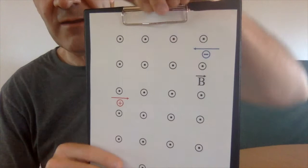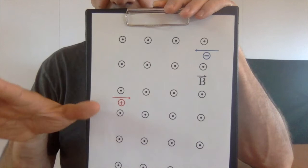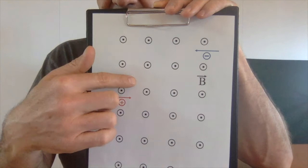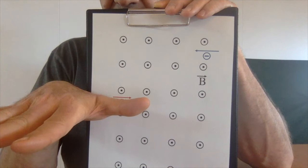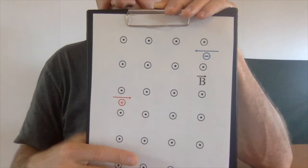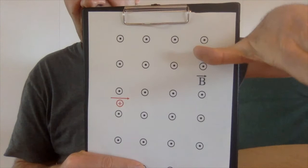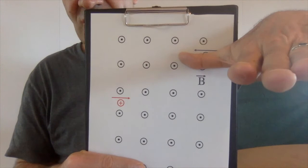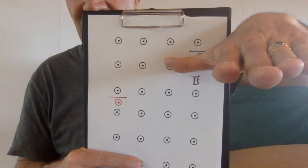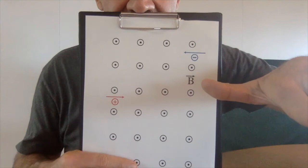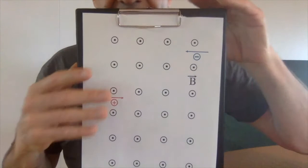Let's do the positively charged particle first. The particle is moving to the left, and the dots indicate the magnetic field is coming out of the page. Using my right hand, thumb to the left and fingers out of the page, the force is down the page. For the negatively charged particle moving to the right, I use my left hand — thumb to the right, fingers out of the page — and the force is also down the page. So in both cases, the force is directed down the page.